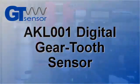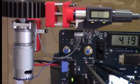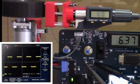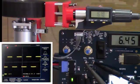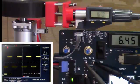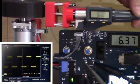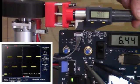The third demonstration is an AKL series digital sensor. With this sensor, you see a 50% duty cycle digital output. This provides speed information. As I change the air gap, the output doesn't change.